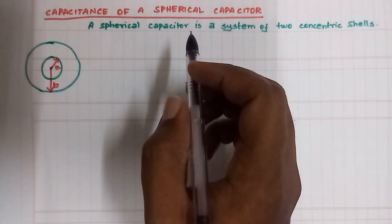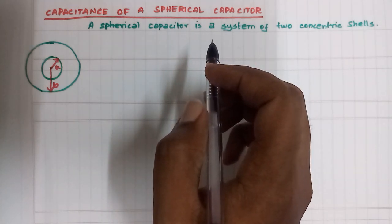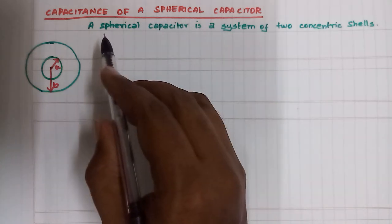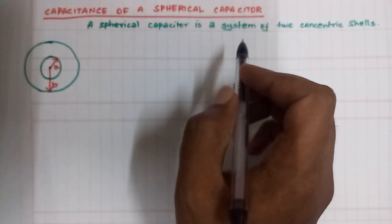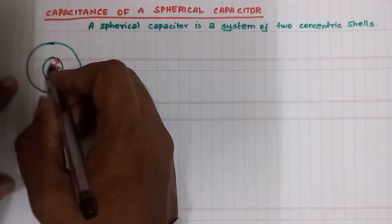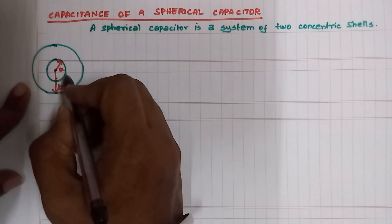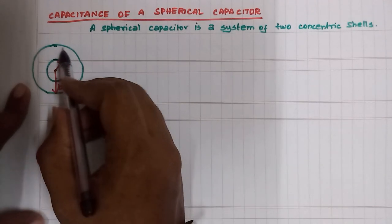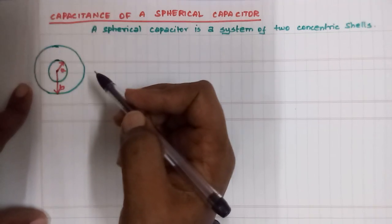In this video, a spherical capacitor is a system of two concentric shells. There are two concentric shells: the inner shell having radius A, and the outer shell having radius B.